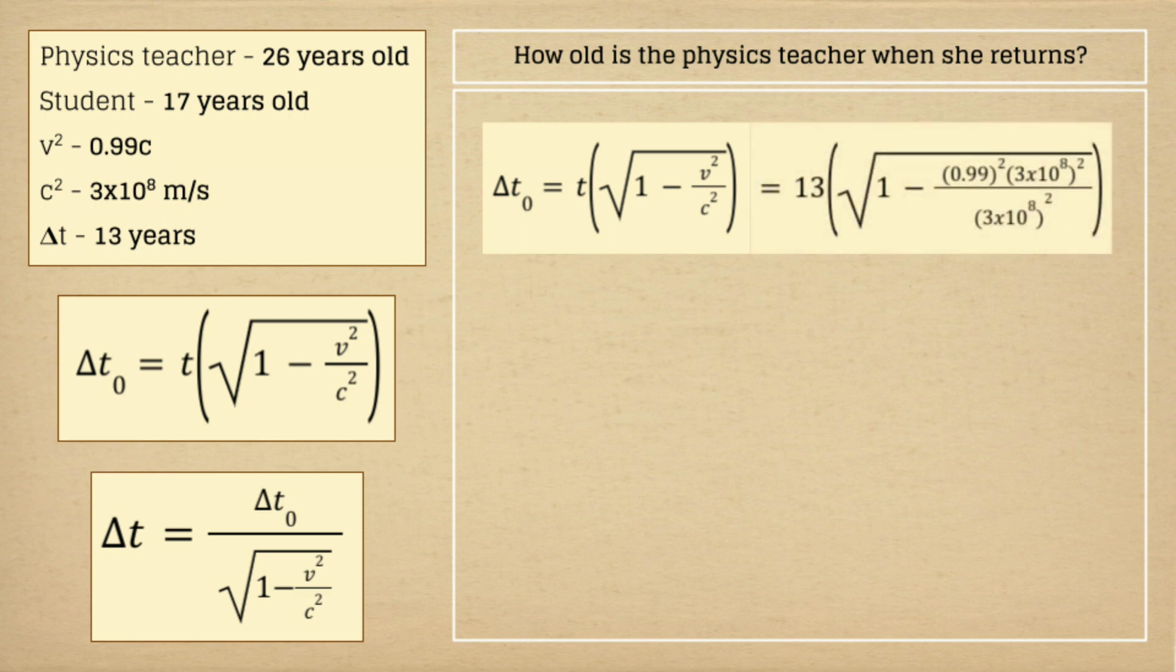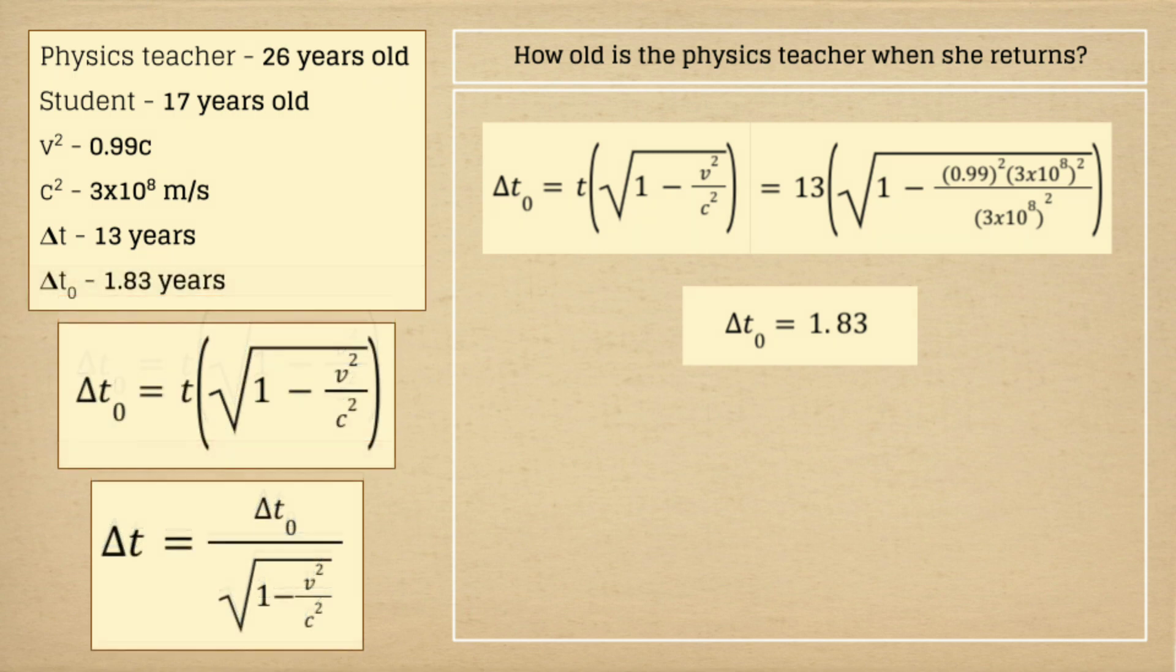After performing all the necessary calculations, we should get 1.83 years as the change in proper time. We can now add this answer to our given values here on the left for later reference.